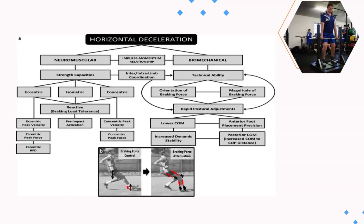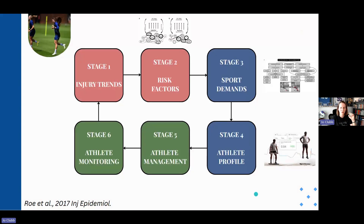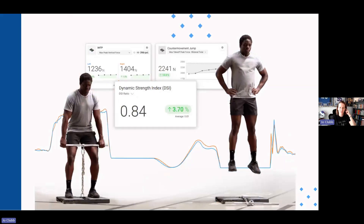We can start to see how these capacities, which may also be risk factors, link into the different demands of the sport — and therefore why we may want to profile them, why we might want to screen for them, and why we may then want to train them. As well as understanding the sport as a whole, we also then need to move on to profiling our specific athlete. This is where VALD helps us out endlessly with the various technologies, tools, and tests that we have available to us.